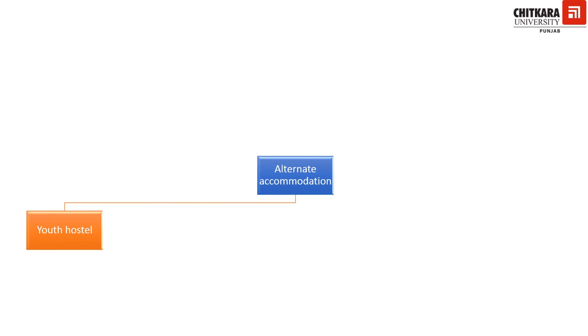The next basis of classification is alternate accommodation. Under alternate accommodation, we have youth hostels — as the name suggests, they cater to the youth who travel for various reasons like education. The youth may not be able to afford the high tariff of a hotel, so these hostels provide them with low-cost boarding and lodging facilities. Railway retiring rooms are present at major railway stations, for the convenience of transit travellers who need to proceed on their journey. They provide a resting place to passengers with confirmed tickets at a very reasonable cost.